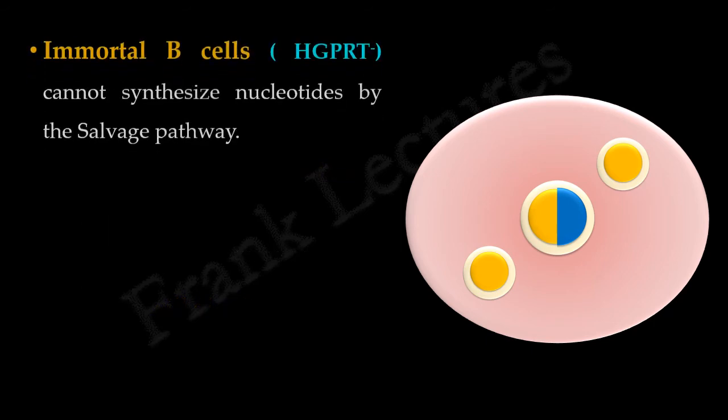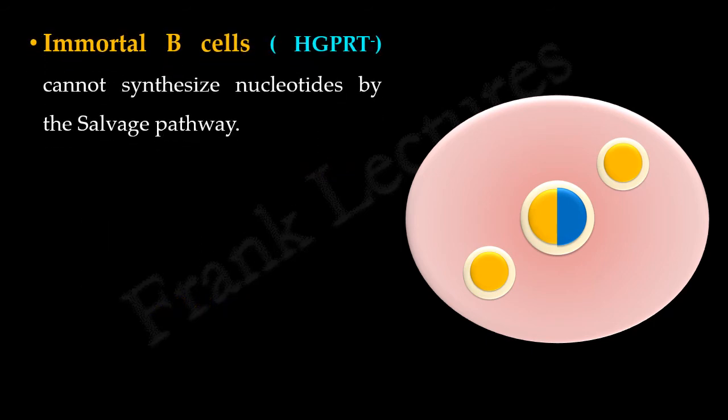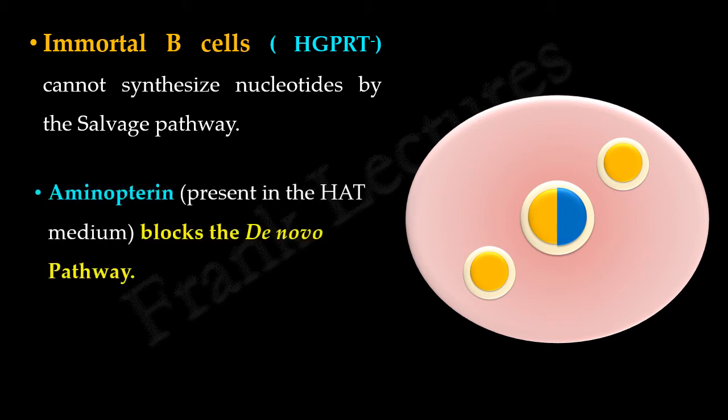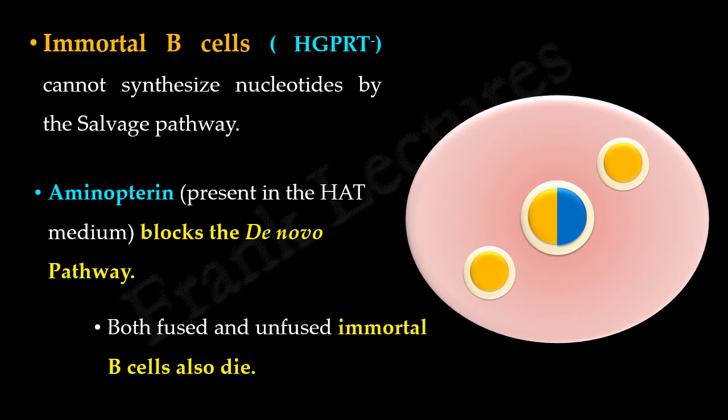Immortal B cells are HGPRT-negative, so they cannot synthesize nucleotides by the salvage pathway. Also, the HAT medium contains aminopterin which blocks the de novo pathway of nucleotide synthesis. Since both pathways of nucleotide synthesis are blocked, the unfused and fused immortal B cells will also die.